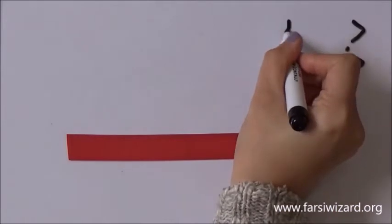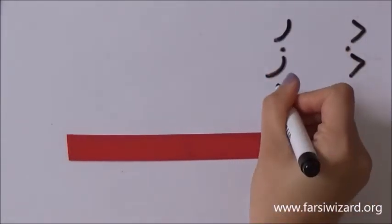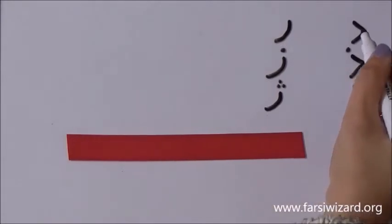If you put one dot on top of it you will get ZAL. And then a few curved looking letters as you can see RE, Z and Z. Okay let me explain.